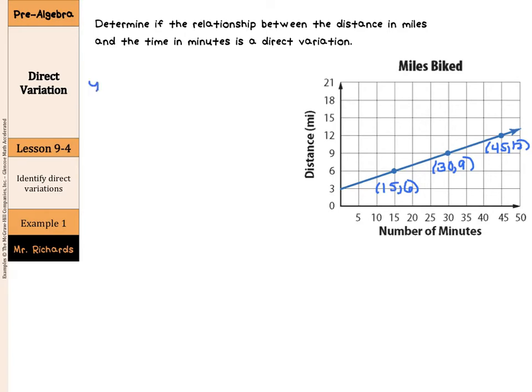Now what we want to do here is look for our relationship between Y over X. Well, our Y is our distance and our X is our minutes. So if I look at these, in my first one I have 6 over 15. My next one is 9 over 30. And then I have 12 over 45.